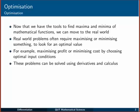Real-world problems, like the milk carton problem, often require maximizing or minimizing something to look for an optimal value. For example, maximizing profit or minimizing cost by choosing optimal input conditions. And these problems can be solved, as you've probably guessed, by using derivatives and calculus.